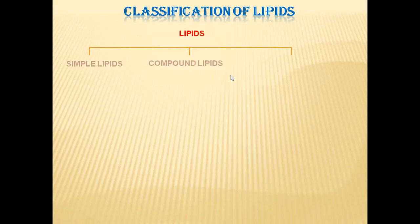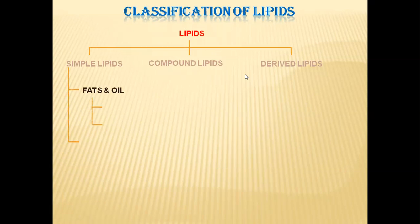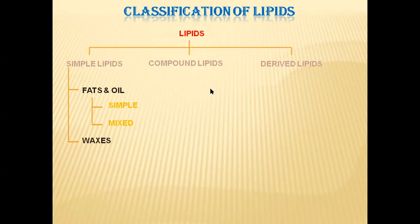Lipids are classified into three categories. One is simple lipids, second one is compound lipids, and third one is derived lipids. Examples for simple lipids are fats and oils. In fats and oils, again, two subclasses are there: simple fats and simple oils, and mixed fats and mixed oils. Another category in simple lipids is wax.